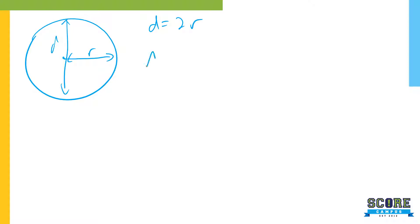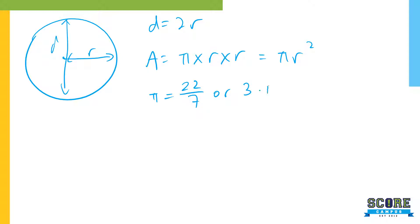Quick recap: circle, center, radius, diameter. Diameter equals two times the radius. Area equals π times r times r, simplified as πr². Pi equals 22/7 or 3.142. Circumference equals 2πr or πd, because 2r equals d.